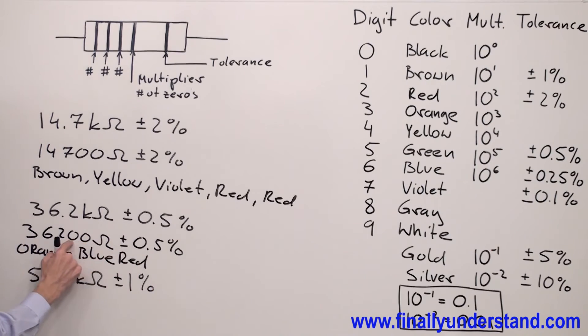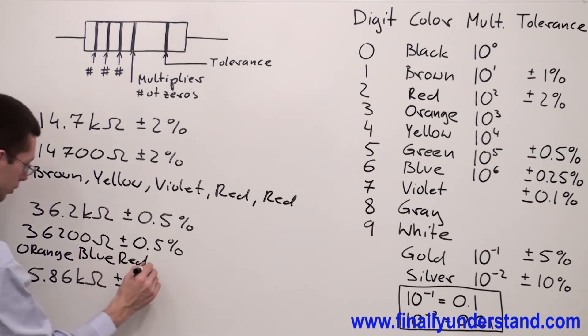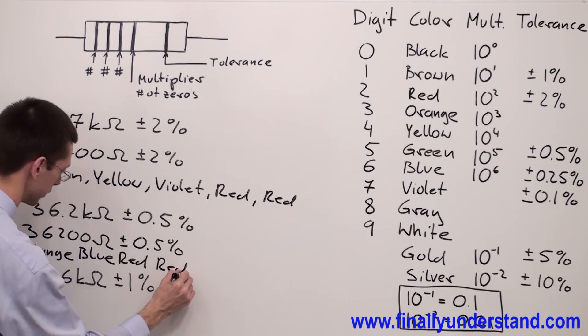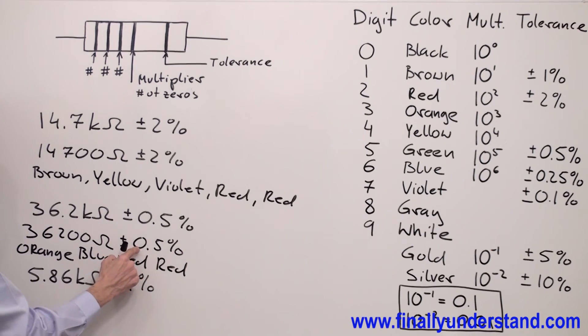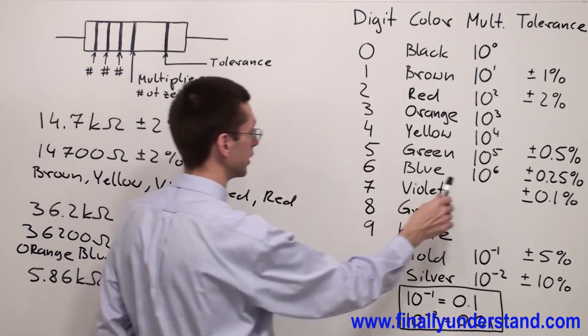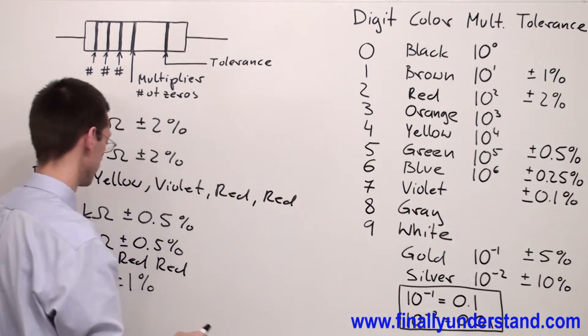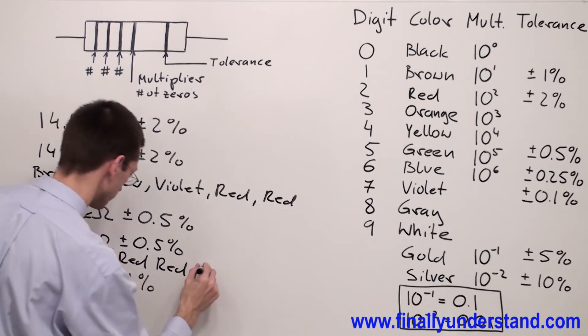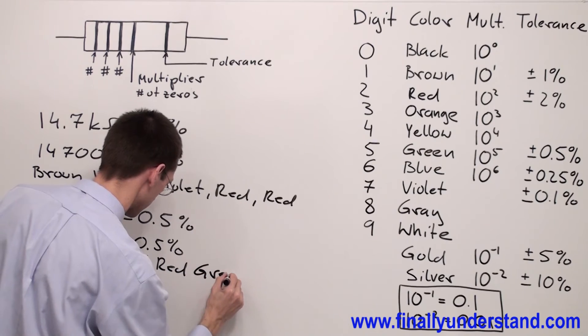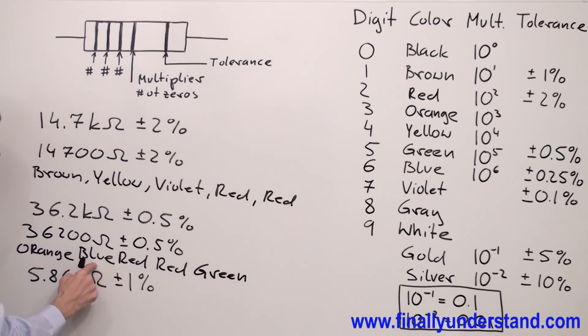How many zeros I have? I have two zeros. Red again. And tolerance is 0.5%. 0.5% is represented by green color. And this is the color code for this resistance.